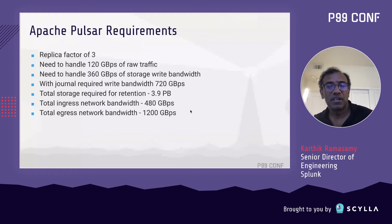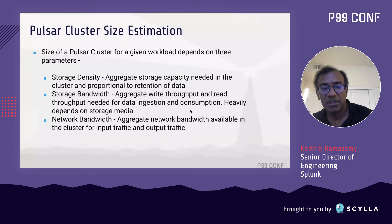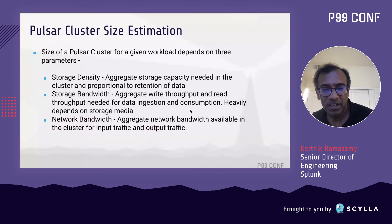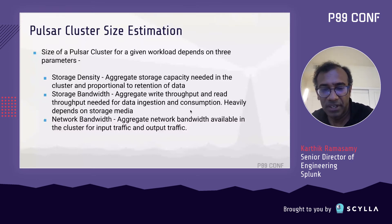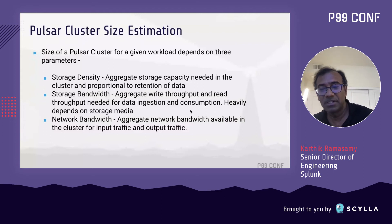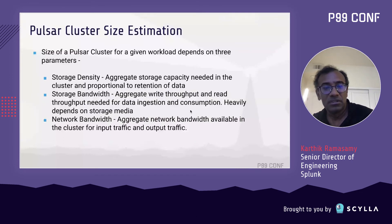Estimating the Pulsar cluster involves three dimensions: first, the ability to absorb the required retention — how much storage density per node; second, storage bandwidth — aggregate write and read throughput needed, which depends on the media (HDD gives lower performance than SSD, and local SSDs give the highest); and third, aggregate network bandwidth needed. Whichever dimension requires the largest number of nodes will dictate the cluster size.